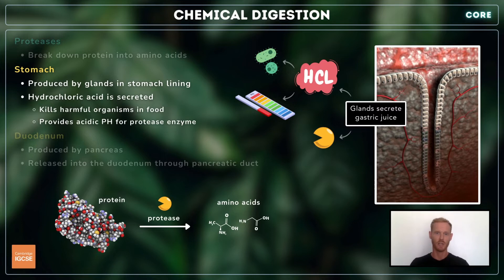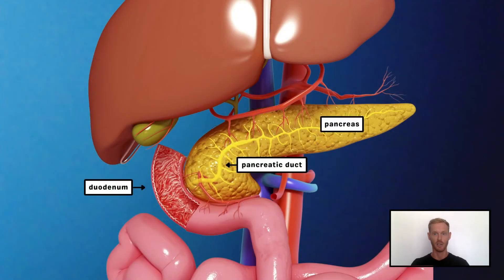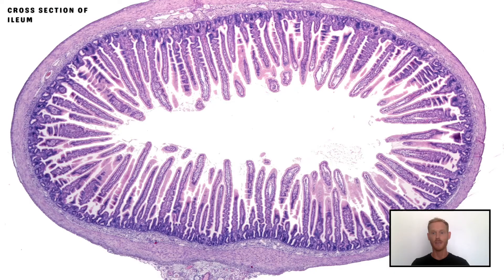The protease in the gastric juice begins the process, but proteins must be broken down further before they can be absorbed. It continues in the duodenum by the action of proteases in the pancreatic juice, and is finalized in the ileum. Here, enzymes in the epithelial cell membranes break down the now short protein chains into soluble amino acids for absorption.